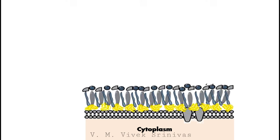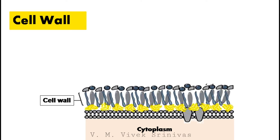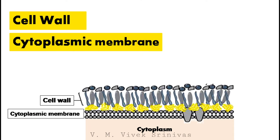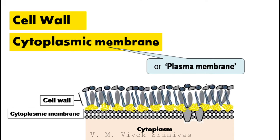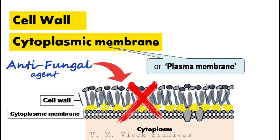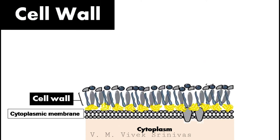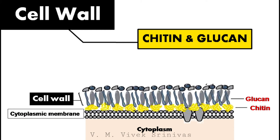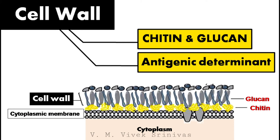Fungal contents are protected and encased inside protective barriers like the cell wall, followed by the cytoplasmic membrane or plasma membrane. These structures protect the fungus from many adverse conditions, and there are antifungal agents used to target these structures. The cell wall is rich in chitin and glucan and plays an important role as an antigenic determinant for the fungus.